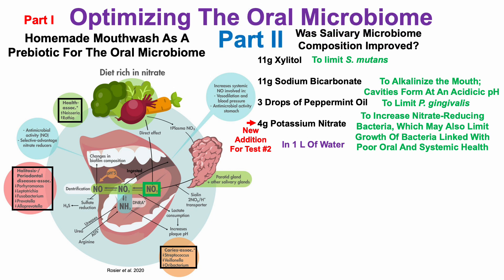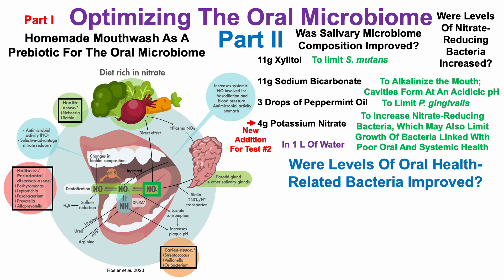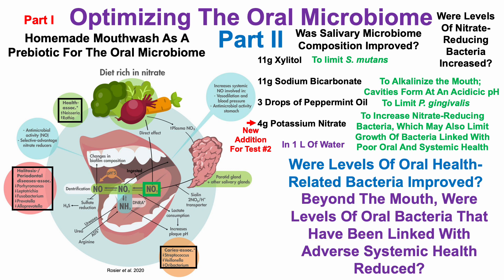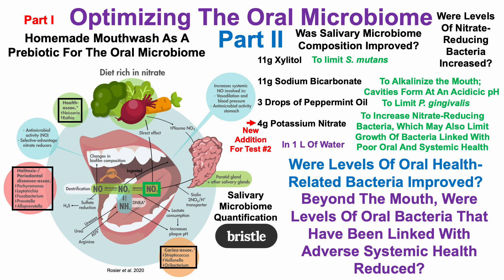In part two — today's video — we'll see whether my salivary microbiome composition improved relative to test number one. There are three questions: first, were levels of nitrate-reducing bacteria increased? Second, beyond nitrate-reducing bacteria, were levels of other oral health-related bacteria improved? And third, beyond the mouth, were levels of oral bacteria linked with adverse systemic health reduced? To answer these questions, I sent another saliva sample to Bristle.